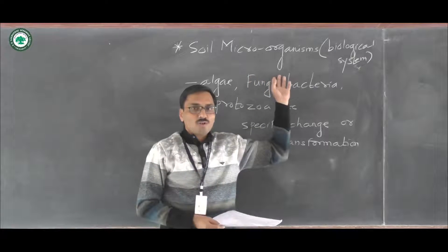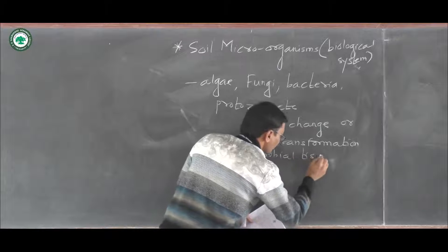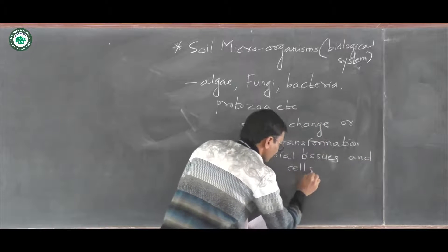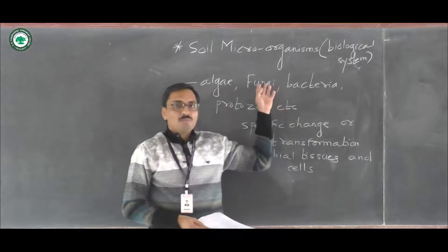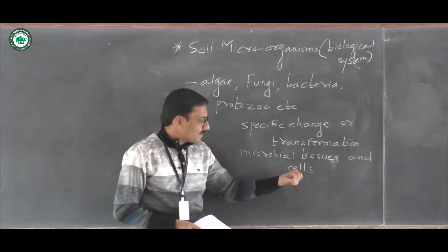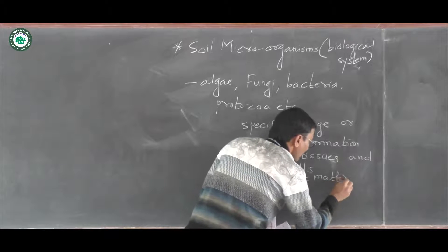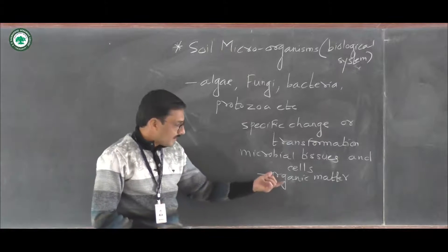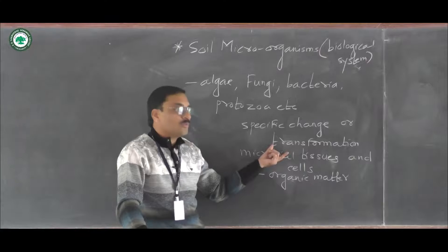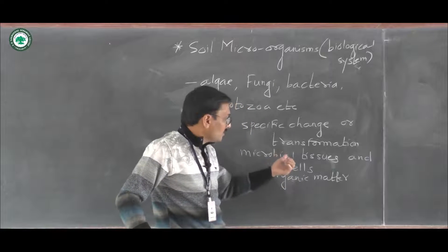These microorganisms synthesize large numbers of microbial tissues and cells, which act as organic matter. This organic matter then converts into fertilizer. That organic matter consists of essential nutrients required for the plant. So the development of organic matter in the form of microbial tissues and cells is one of the important functions of microorganisms.